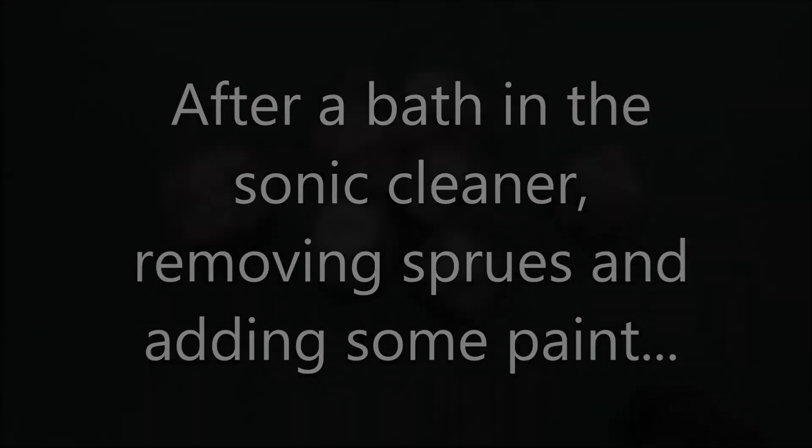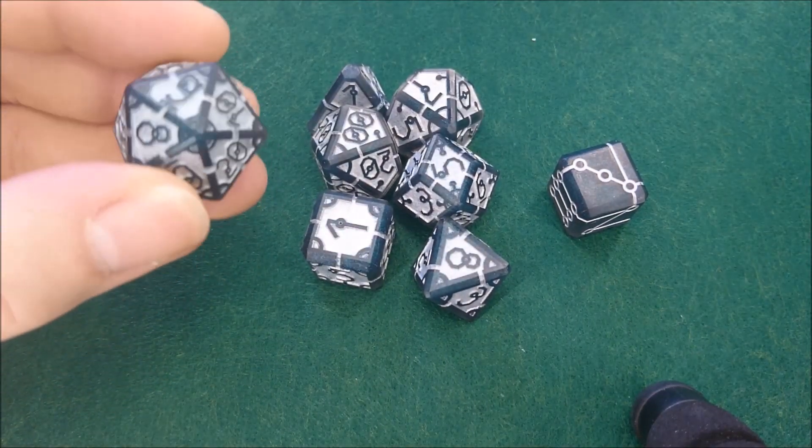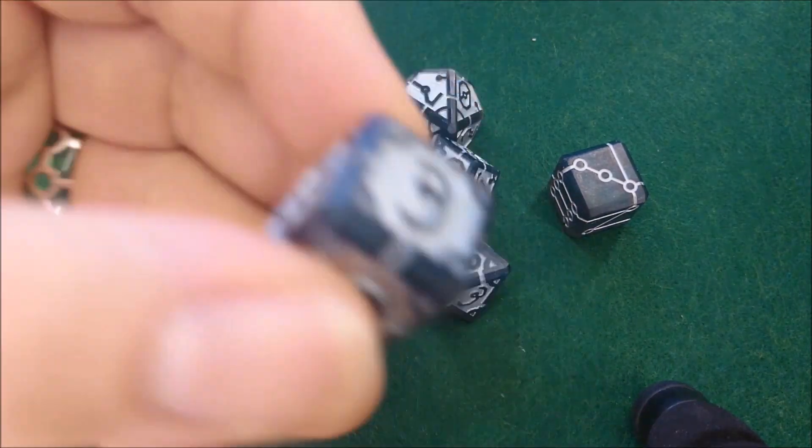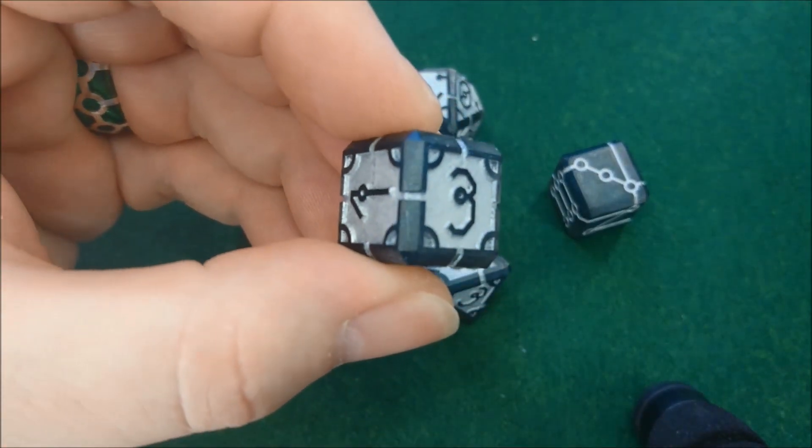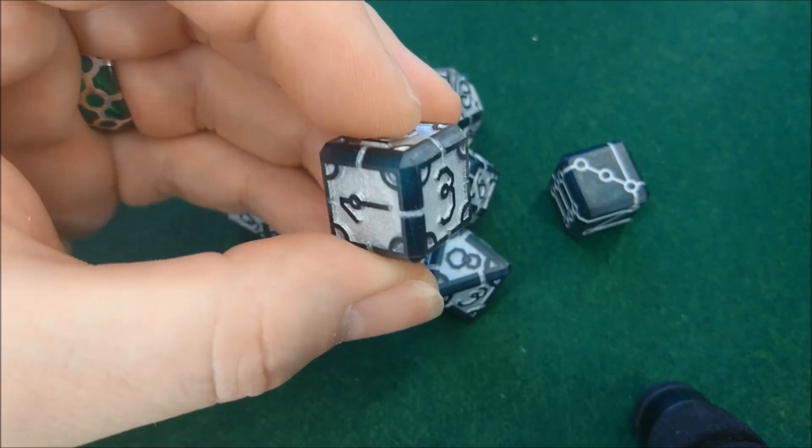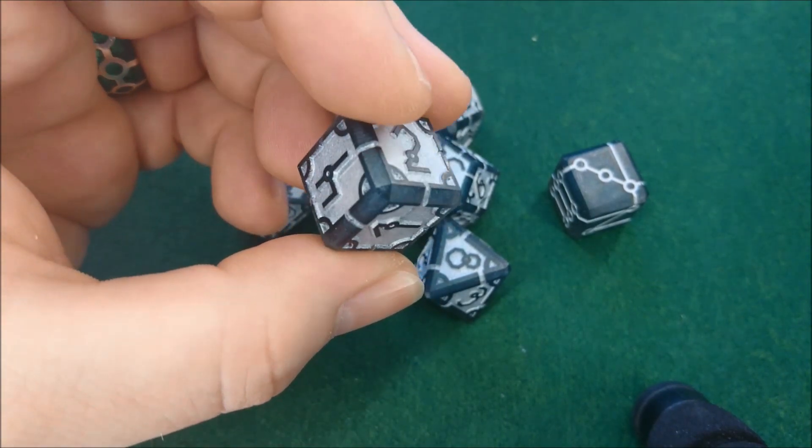So our dice are finished now. This is the result. Let's take a look at some of those bigger edges here. And we can see all the greenish glitter in all smoke.